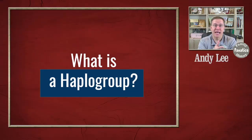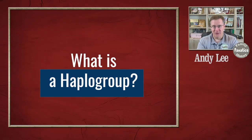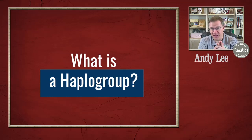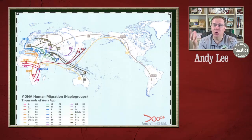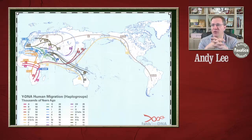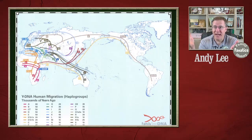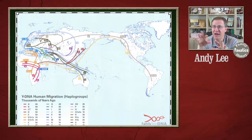The first thing we can learn from the term haplogroup is 'group' — it's a group of people. But what do those people have in common? We can look at some maps here. These maps show an origination point and different letters going all over. This is the Y-DNA map, and you can see that it starts in Africa and spreads out from there all around the world.